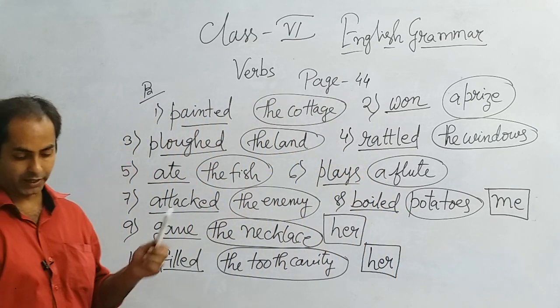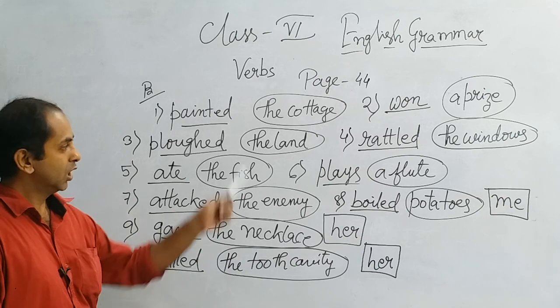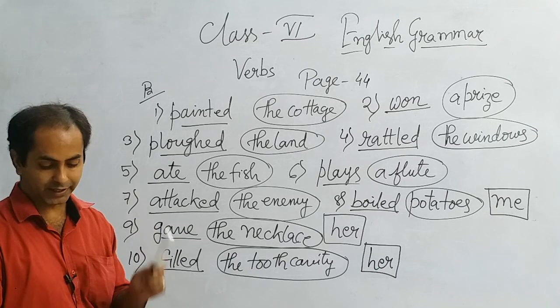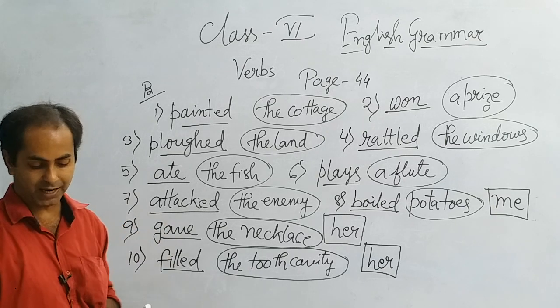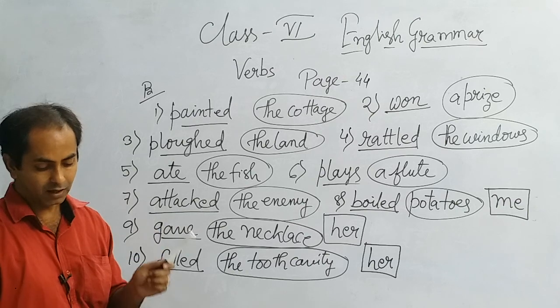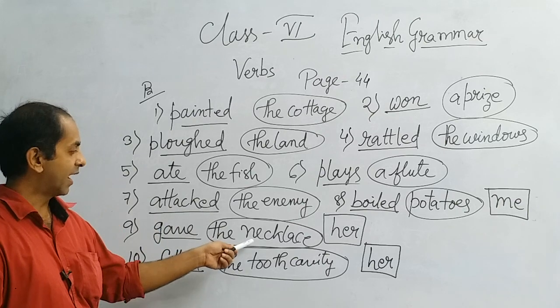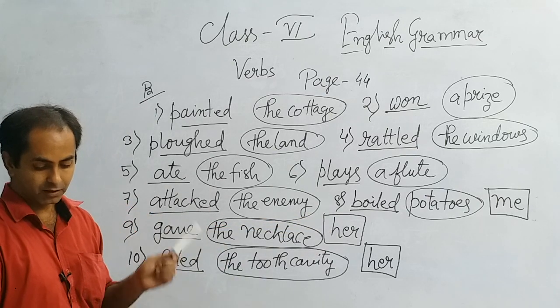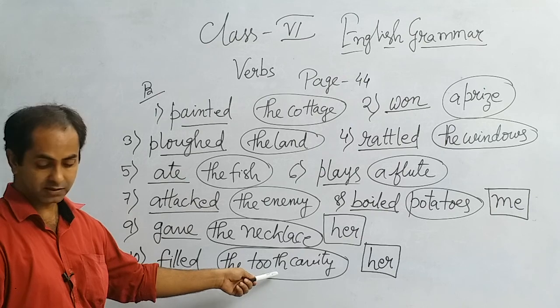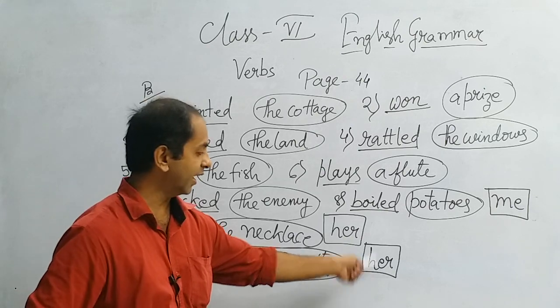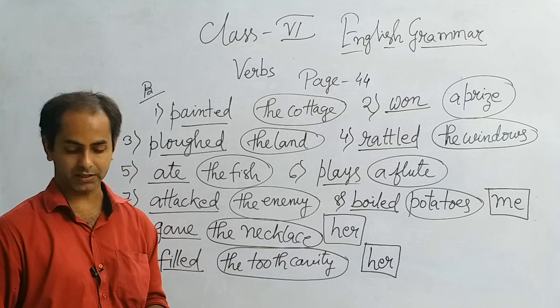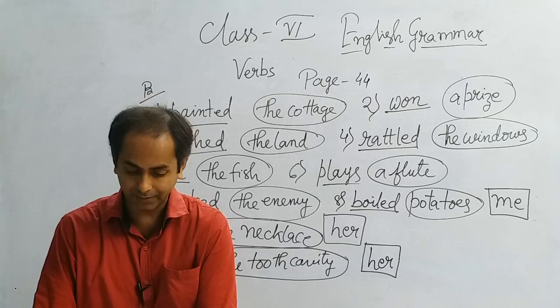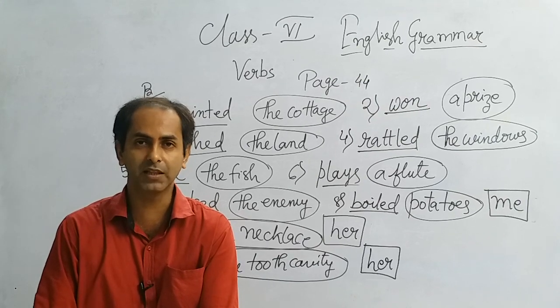So children, other than number 8, 9 and 10, you are getting only one object, the direct object. For number 8 we are getting potatoes the direct object and me the indirect object. Number 9, the necklace is the direct object and her is the indirect object. And for number 10, the tooth cavity is the direct object and her is the indirect object. So children, we have completed this one and in our next video we will come and welcome to know about the intransitive verbs. Till then, bye.